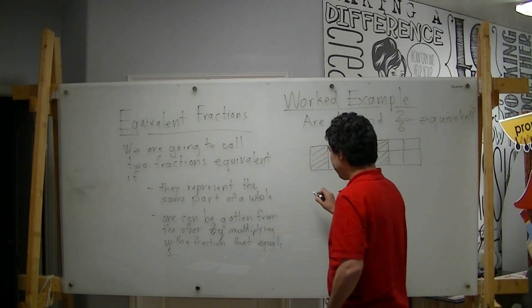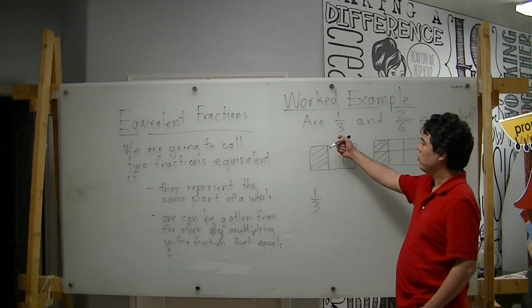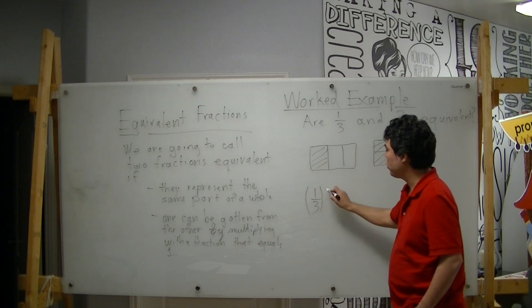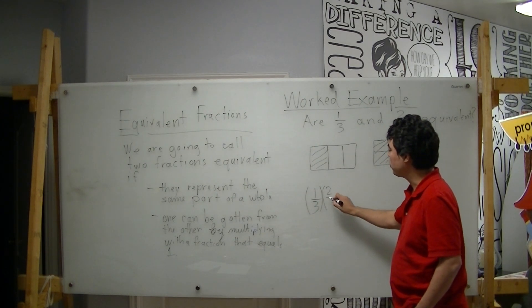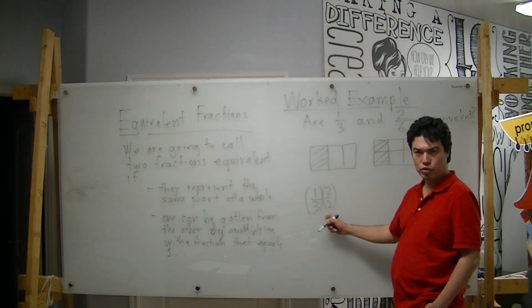If I take the fraction one-third, which is our first fraction, and I were to multiply it with the fraction two over two, because this fraction has the same numerator and denominator, it equals one.